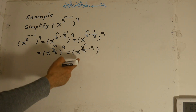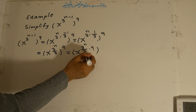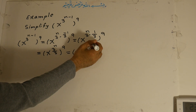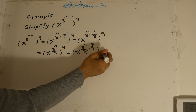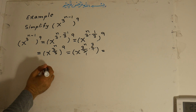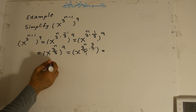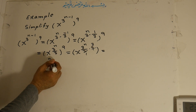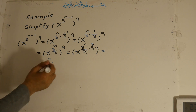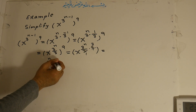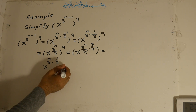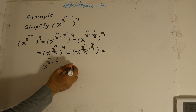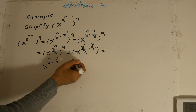Now we can reduce: 3 and 9 — dividing 9 by 3 gives 3. This means the result equals x to the power of 3 to the power of n, times 3, which is 3 to the power of 1. We can write this as x to the power of 3, all to the power of n plus 1.